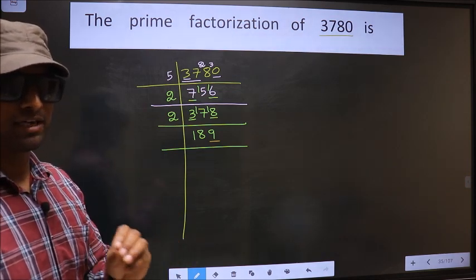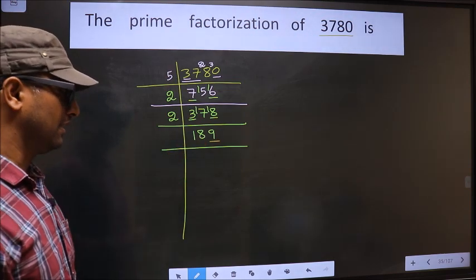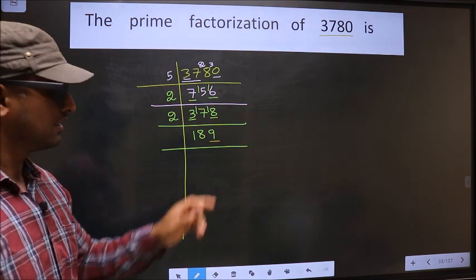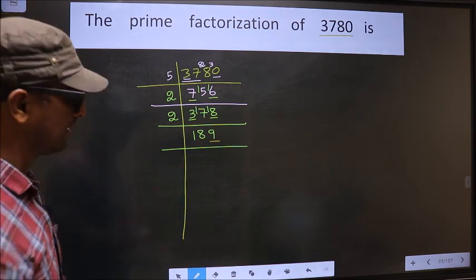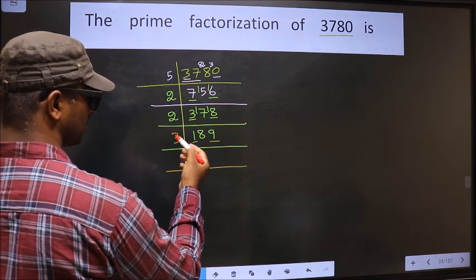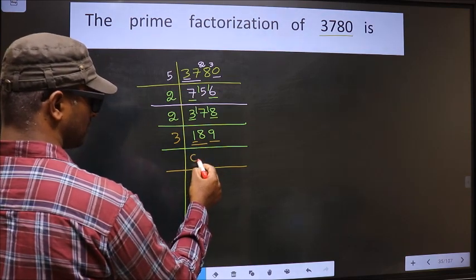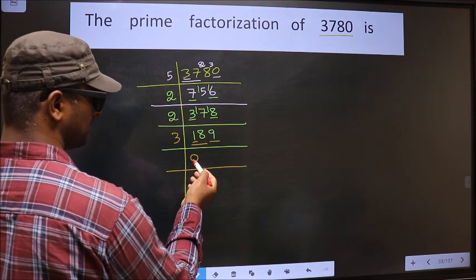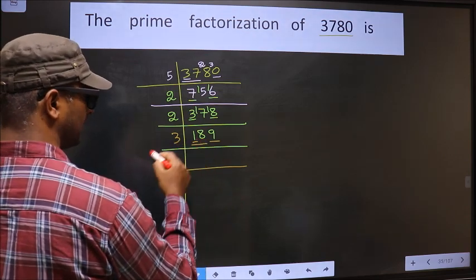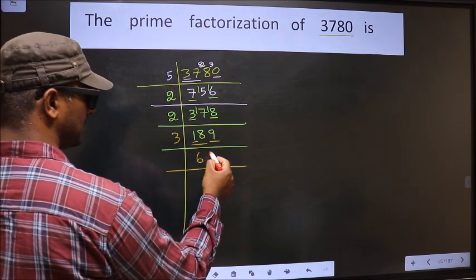To check divisibility by 3, we should add the digits. That is 1 plus 8 plus 9. We get 18. Is 18 divisible by 3? Yes. So this number is also divisible by 3. So we take 3 here. The first number is 1; 1 is smaller than 3, so we take 2 numbers, that is 18. Whenever you are taking 2 numbers, you should put 0, but at the start whether you put 0 or not it doesn't make any difference, so no need to write 0. Here we have 18. When do we get 18 in the 3 table? 3×6=18. The other number is 9. When do we get 9 in the 3 table? 3×3=9.